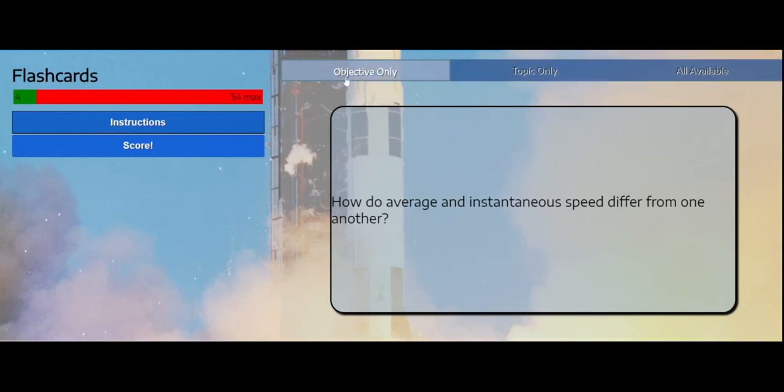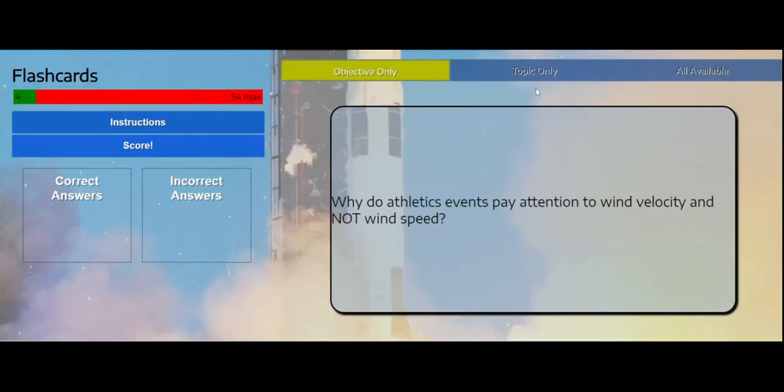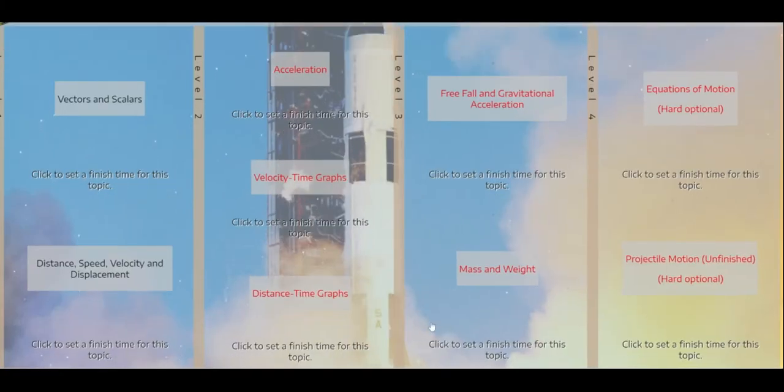Objective only will only give you flashcards for this particular unit. So in this case, distance, speed, velocity, and displacement. However, if you click the topic only button, this will give you all the flashcards available for the entirety of this unit.